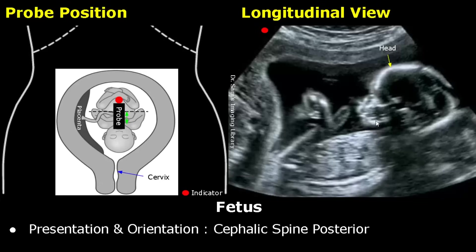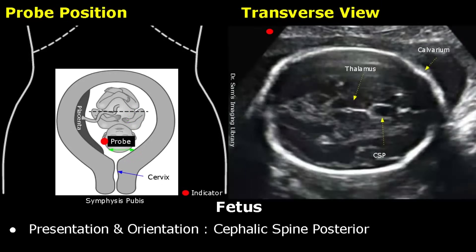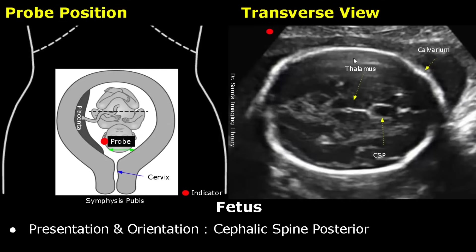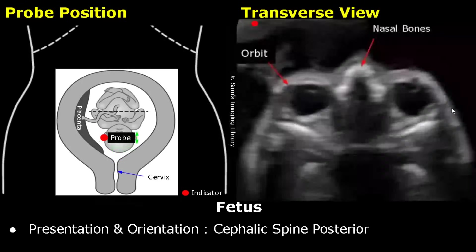We can also get a mid-sagittal profile here, which gives us great detail of fetal anatomy. In cephalic presentation, to view the fetal head and brain in transverse plane, bring the probe down towards the symphysis pubis and you will find the fetal head. You can move the probe to the side until you see parietal bones on the top and bottom of the image. Adjust the probe slightly until you can see the thalami and the cavum septum pellucidum. When you find these structures, you can measure the biparietal diameter and head circumference.